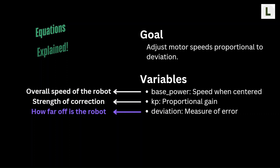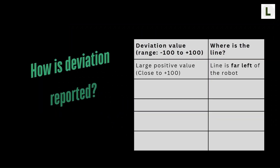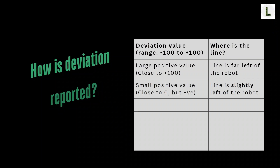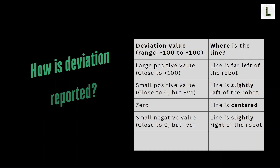Let's look at what the deviation values mean. A large positive value close to plus 100 means the line is far left of the robot. A small positive value close to zero but still positive means the line is slightly left of the robot. A deviation value of zero means the line is centered. A small negative value means the line is slightly to the right of the robot. And a large negative value close to minus 100 means the line is far right of the robot.